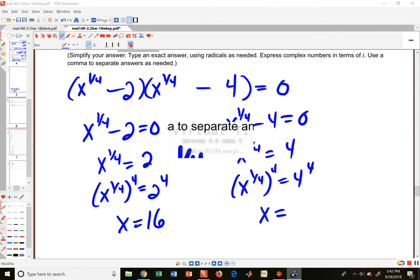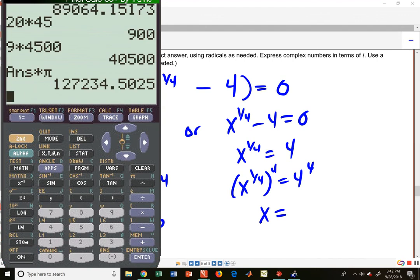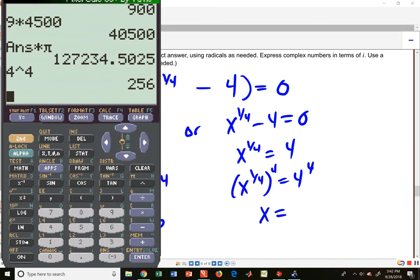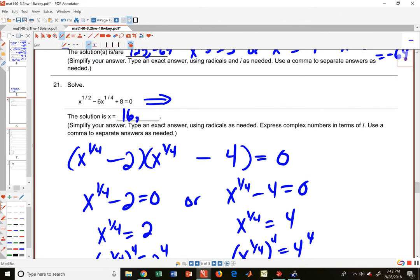Let's just double-check it on our calculator. So I'm pulling out the old TI-83, and we've got four to the fourth power: 256. So we got two answers, 16 and 256. Hey, thanks for watching!